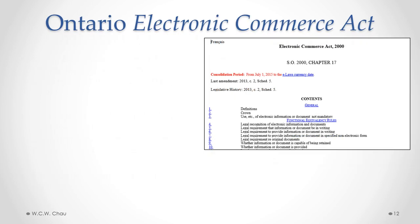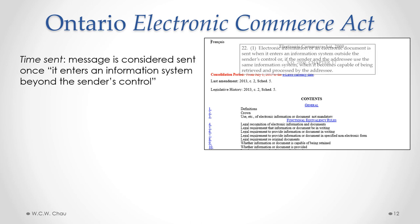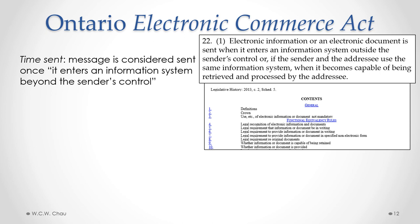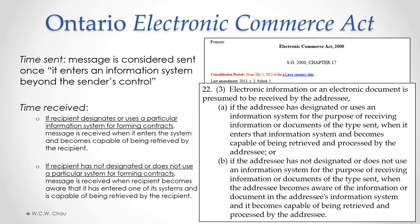The ECA contains specific rules determining when an electronic message is considered sent and received. With regard to sending, a message is considered sent once it enters an information system beyond the sender's control. For example, when you press the send button on your smartphone or computer, that message leaves your device and enters the internet — which is an information system beyond your control. That moment is when your message is considered to have been sent.